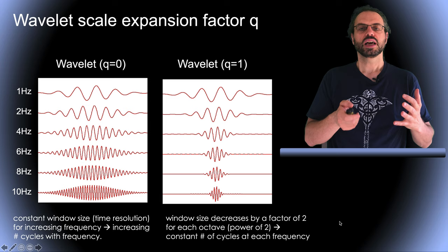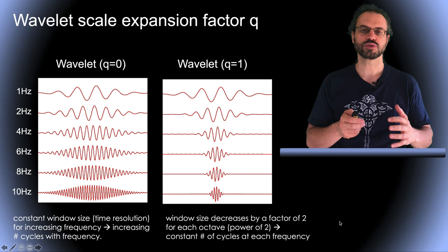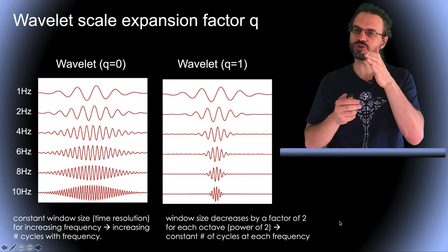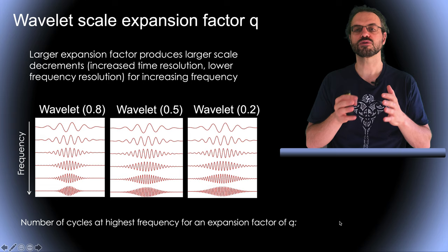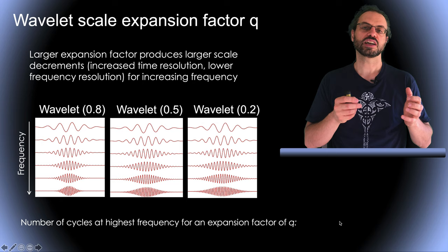Here, our goal is visualization of EEG data, so we do not want to restrict ourselves to using frequencies which are a power of 2. We might want to have linear increments in frequencies, such as represented here. We might also want to use different scale expansion factors, with wavelets having different numbers of cycles at different frequencies. For example, with a wavelet expansion factor of 0.5, the size of the window at the highest frequency is about half the size of the window at the lowest frequency.